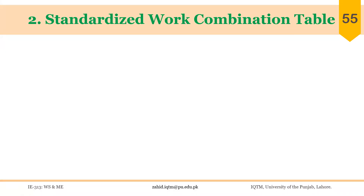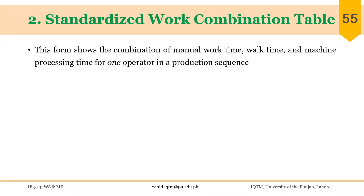The second chart drawn to timescale that we are going to discuss is the Standardized Work Combination Table. It has a big name and you won't find it mentioned in many books, but it is an important chart. This form or chart shows the combination of manual work time, walk time, and machine processing time for one operator in a production sequence.